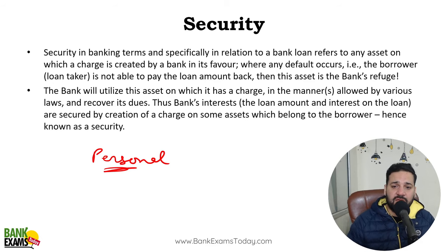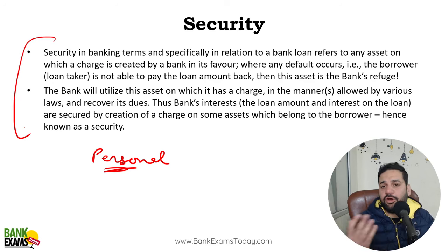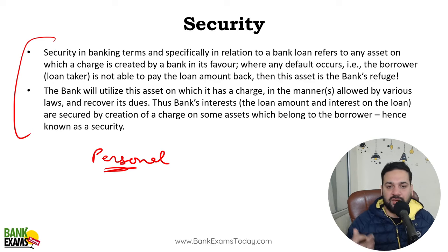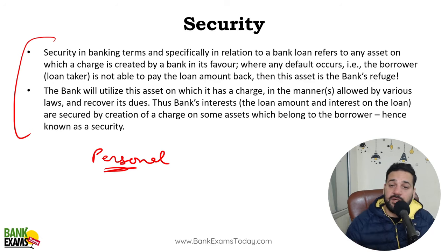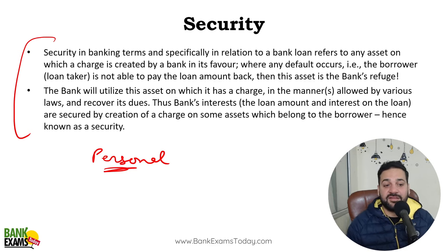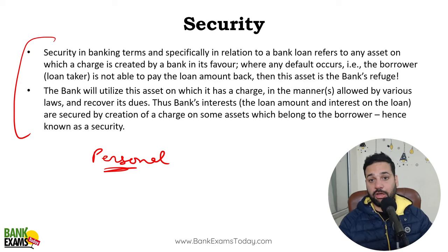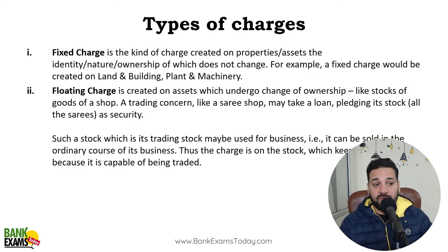In case you default on your payments — for example, if you took an Activa on a loan worth one lakh rupees, paid ten thousand rupees as a down payment, got the Activa, and then didn't pay your EMIs — the bank is going to take away your Activa. It's a security and the bank will take away that secured asset.